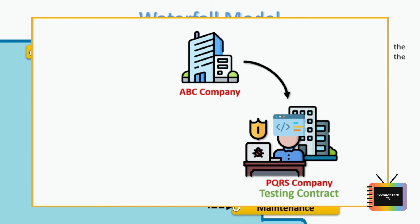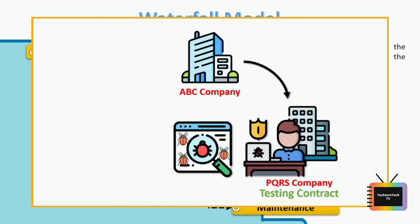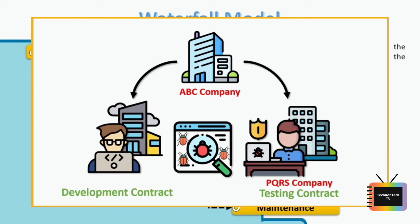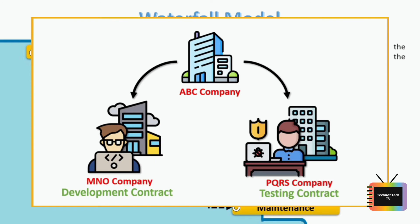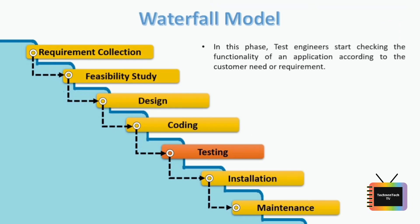During the testing phase, many issues are found. ABC company then has to hire another company for development support, so the cost increases significantly. This is a major drawback of the waterfall model — you cannot go back to a previous stage.